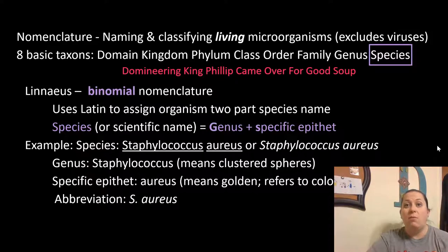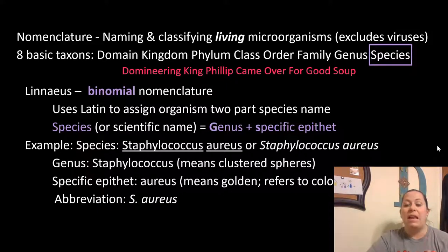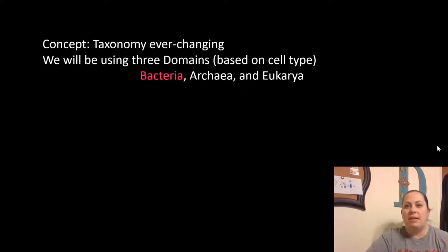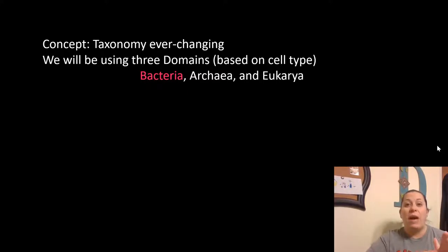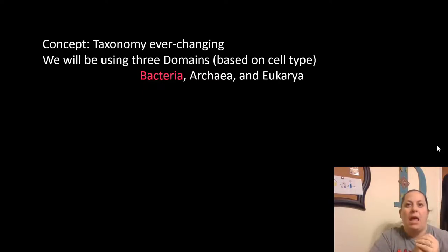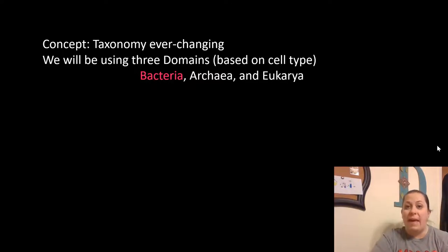This binomial name can be abbreviated by taking the first letter of the genus — still capitalized with a period — followed by the specific epithet. Also understand that taxonomy, naming, organizing, and classifying organisms is ever-changing. The top taxon used to be kingdom, but it has actually moved up to using three domains, and these domains are based on cell type.